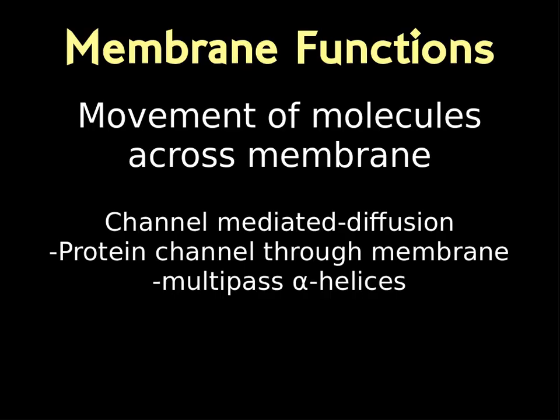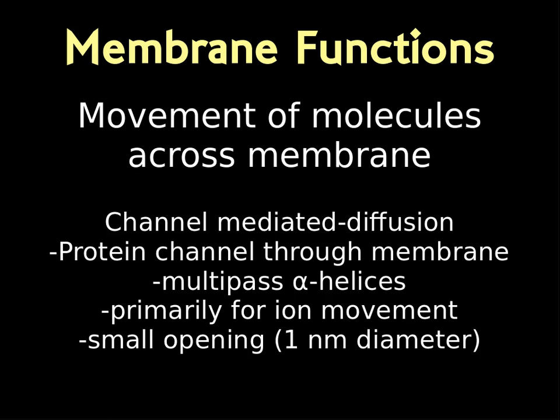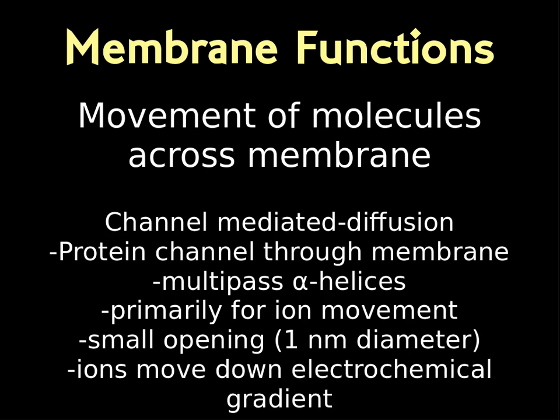These channel proteins are often multi-pass alpha-helices through the membrane. While they allow through things larger than what can pass by simple diffusion, we generally don't allow very large things through channel-mediated diffusion — primarily this is for ions, both small organic ions and inorganic ions. These channels tend to have very small openings, about one nanometer in diameter, and ions simply move down their electrochemical gradients.